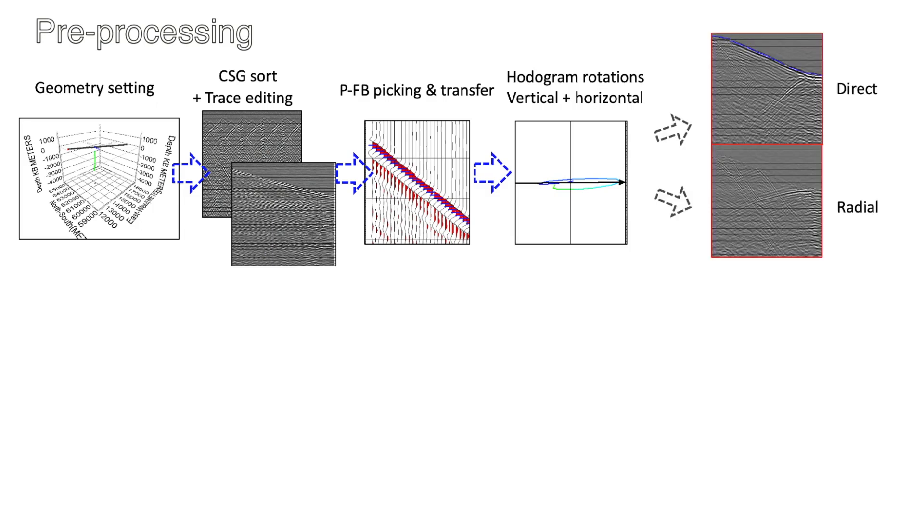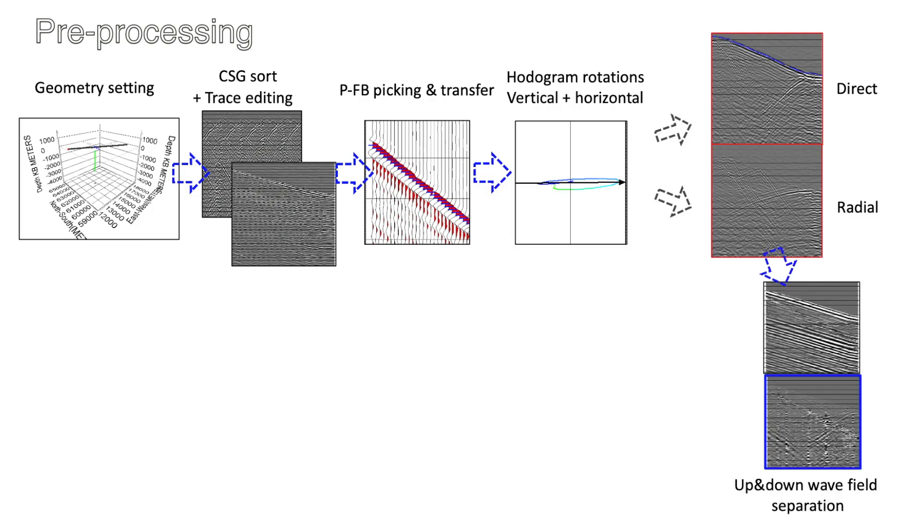After the initial data preparation including loading, autocorrelation, and stacking, we set up the source receiver geometry. We sorted the data by the common shot gathers and went through the trace editing to get rid of the anomalies. The P wave first arrivals were picked at the Z component mostly and transferred to other channels for later hodogram analysis and wave field alignment. We redistributed the primary downgoing P and S wave energy using the two-step hodogram rotations. After that, the median filters were applied to separate the downgoing and the residual fields.